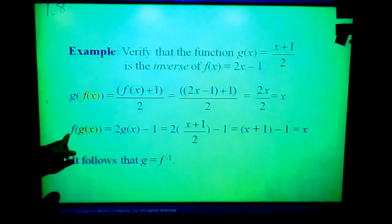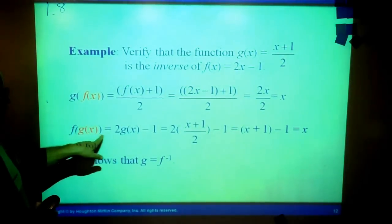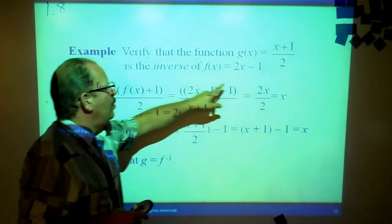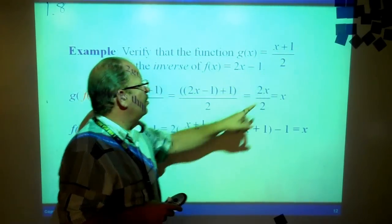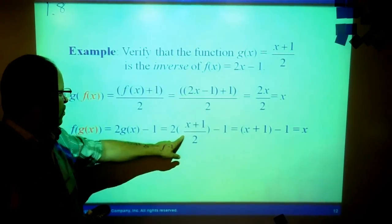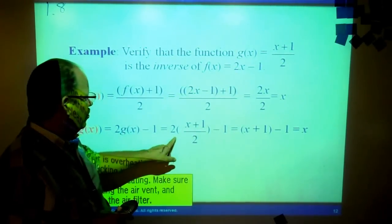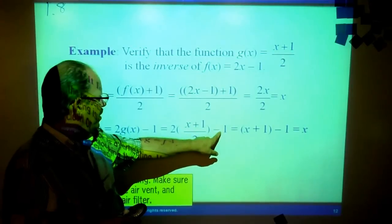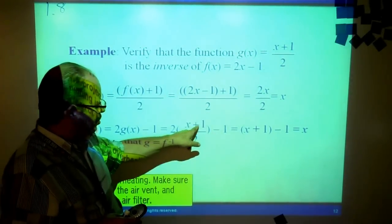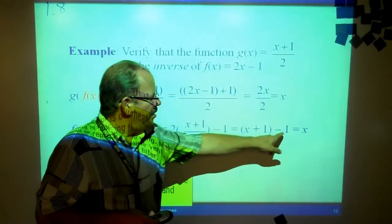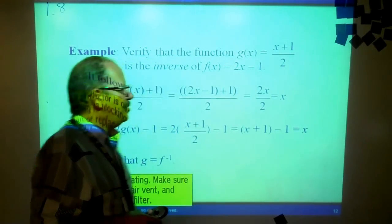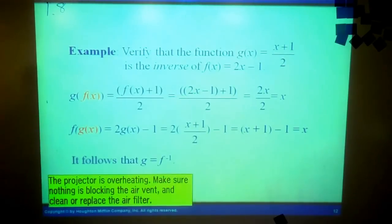You could have done f of g(x), it didn't matter the order. So we would take f(x) as 2x minus 1 and we would insert (x + 1) over 2 where the x is here. So 2 times (x + 1) over 2 minus 1. These 2s will cancel. You'll be left with x plus 1 minus 1. Plus 1 minus 1 undoes it and you have x.